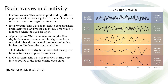Brain waves are measured in hertz, which is cycles per second. According to the article 'Changes in the Brain's Bioelectrical Activity in Cognition, Consciousness, and Some Mental Disorders,' brain waves are categorized based on their frequency depending on the brain activity. Listed are the different brain rhythm waves and what causes them.